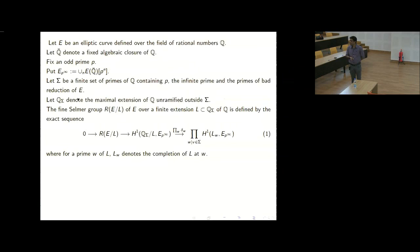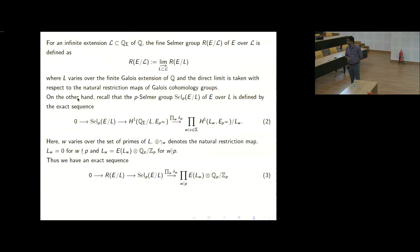The fine Selmer group is a subgroup of the Selmer group, and in a sense the smallest you can have, because we put local conditions to be zero. That is why it is called the fine Selmer. Some people also call it the zero Selmer because it is often very small. Greenberg denotes it by S^1_A.